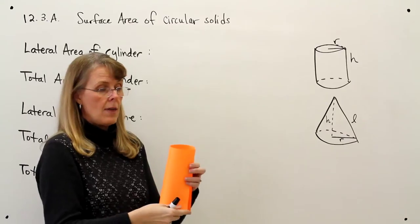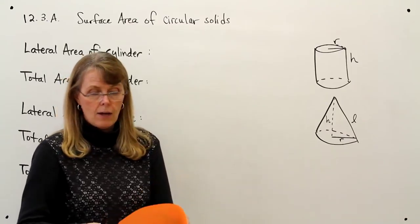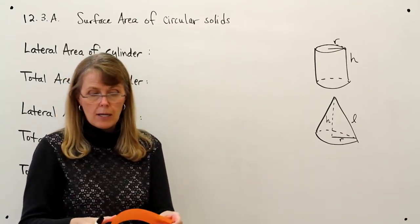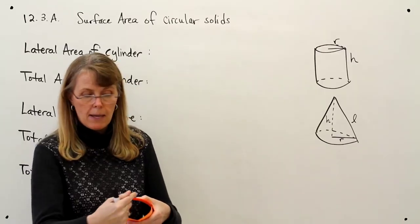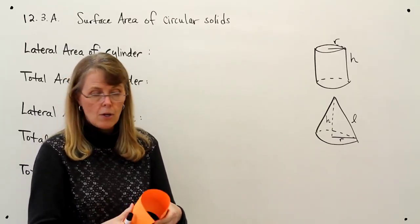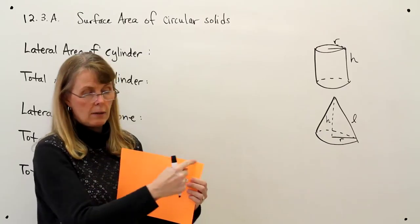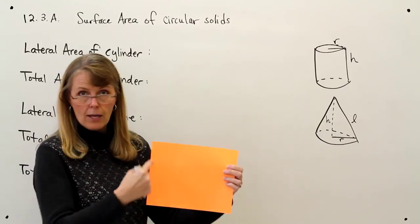The other side, if I unroll it, this edge right here, you can see, makes the circumference of that circle. So the one edge of the rectangle is the circumference and the other edge is the height.